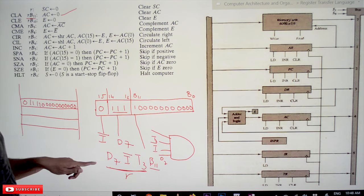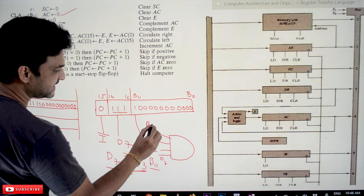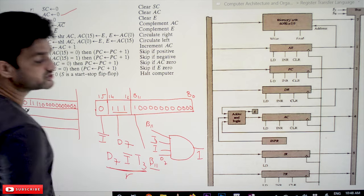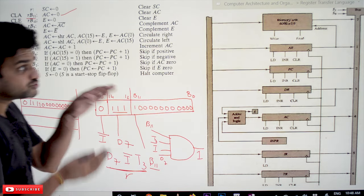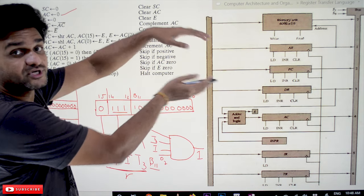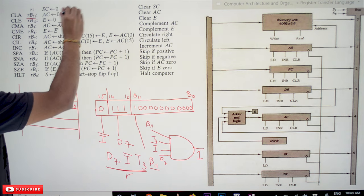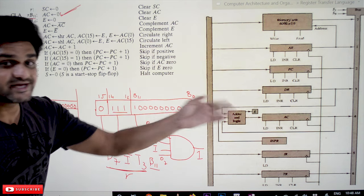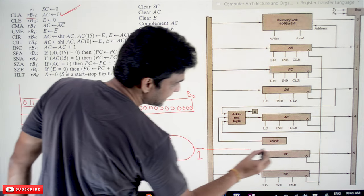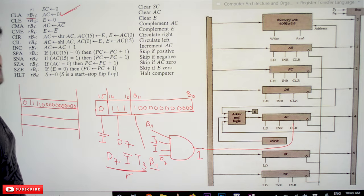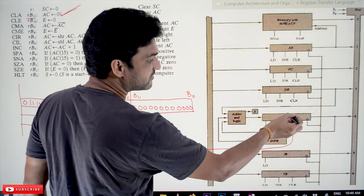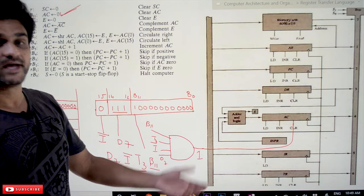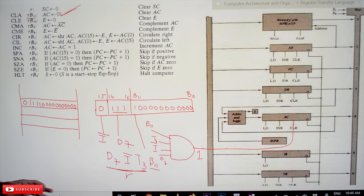Small r combined with a specific address bit decides the operation. For example, if r is true and b11 is true, this AND gate generates an output of 1. That output is connected to the circuit such that the accumulator is cleared — the accumulator is made to 0. This output is directly connected to the clear input of the accumulator, so the value in the accumulator will be made to all zeros. This is how the CLA (clear accumulator) register reference instruction gets executed.